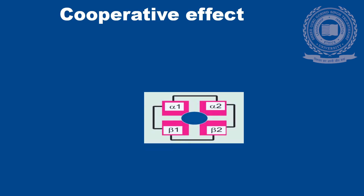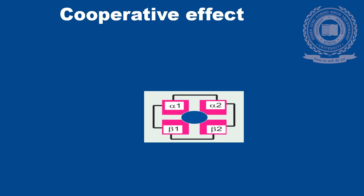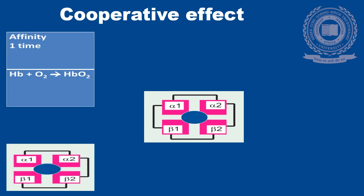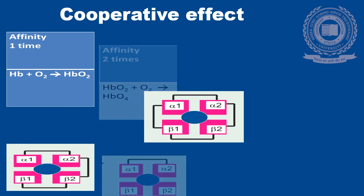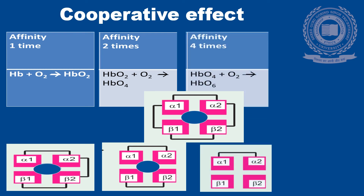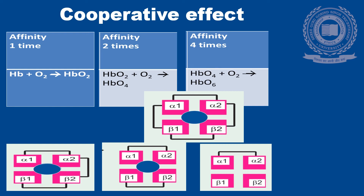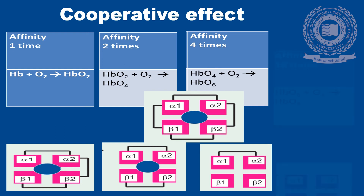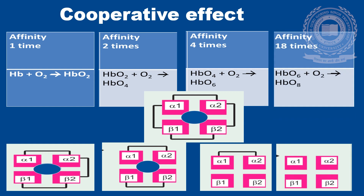Cooperative effect. Hemoglobin shows a positive cooperative effect. Binding of the first molecule of oxygen increases the affinity for the second molecule of oxygen two times. Binding of the second molecule increases the affinity four times for the third, and binding of the third molecule increases the affinity 18 times for the fourth molecule of oxygen.